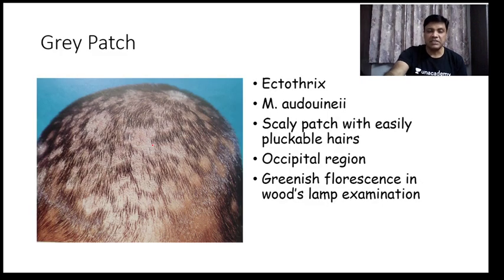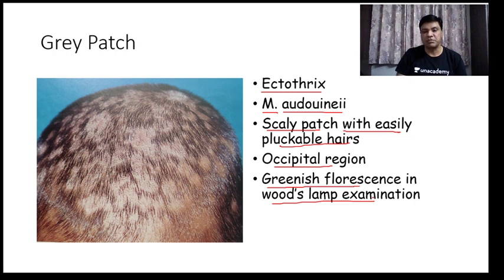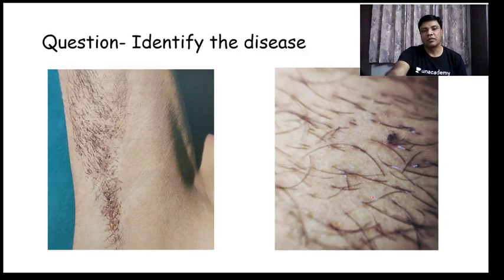Grey patch is another non-inflammatory type of tinea capitis characterized by ectothrix — spores outside the hair shaft — caused by Microsporum audouinii. Clinically you will see a scaly patch with easily pluckable hair in the occipital region. This type gives greenish fluorescence on Wood's lamp examination. Microsporum species gives greenish fluorescence on Wood's lamp. Grey patch and black dot are two non-inflammatory types of tinea capitis, while kerion and favus are inflammatory types.